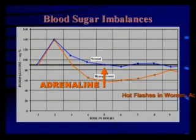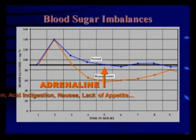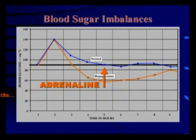Also hot flashes sometimes in women, acid indigestion, nausea, and lack of appetite. Many people get trapped in the middle with depressed anxiety, tension fatigue syndrome, or mood disorders and hyperactivity in children. We used to think that fatigue was the most common symptom of hypoglycemia — it's not. It's anxiety. Anxiety is the number one symptom, walking around wired and sometimes tired because of all this adrenaline flooding your system all the time.